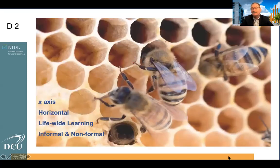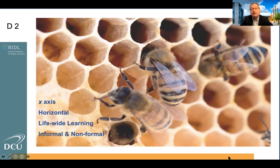Dimension two, as the image here tries to represent, is a little bit more on the x-axis. Almost like a honeycomb, where it's learning through your own interest — not necessarily linked to work-related learning — where you fill the empty honeycombs with knowledge, experiences, and skills according to your interest. These are done not in any particular order, they're not necessarily connected, and they can be quite different. In that sense, they're more akin to life-wide learning on that horizontal axis, and tend to be more informal or non-formal learning experiences.